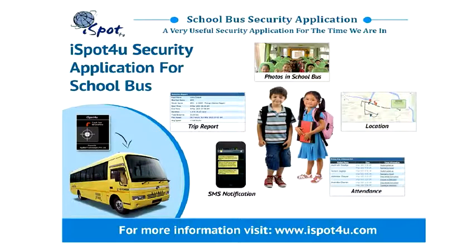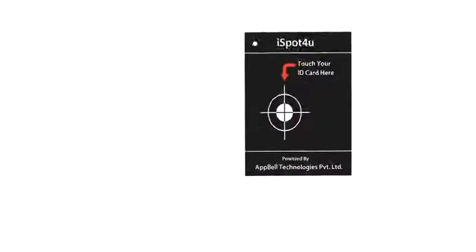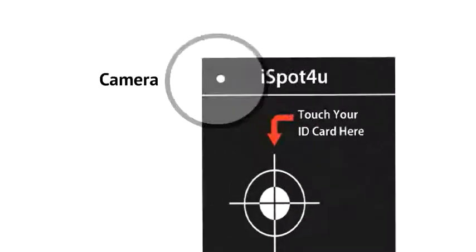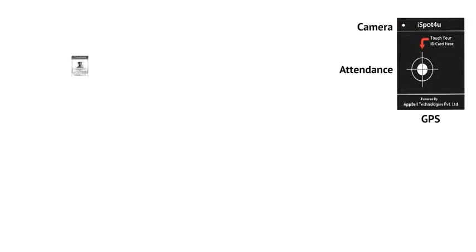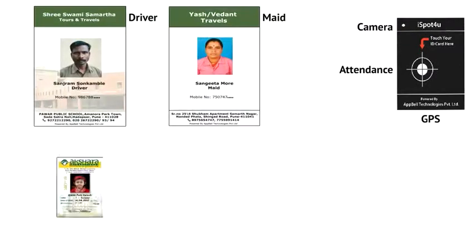iSpot4U device installation is very easy and gets installed with a single wire. The iSpot4U device has capability of GPS, camera, and attendance. We issue smart cards to the driver, attendant, maid, and optionally to every student.